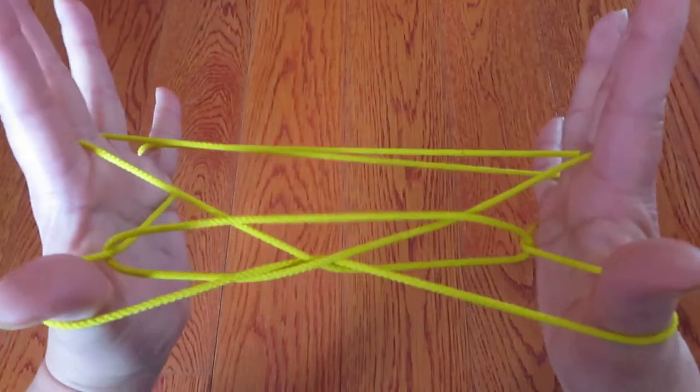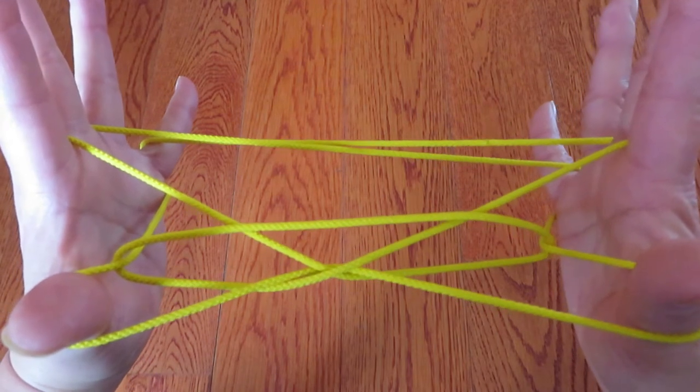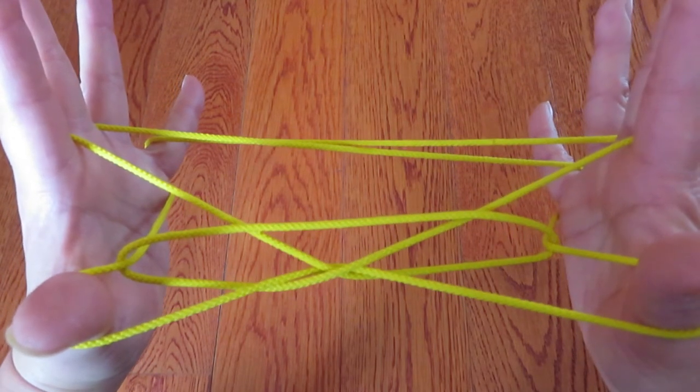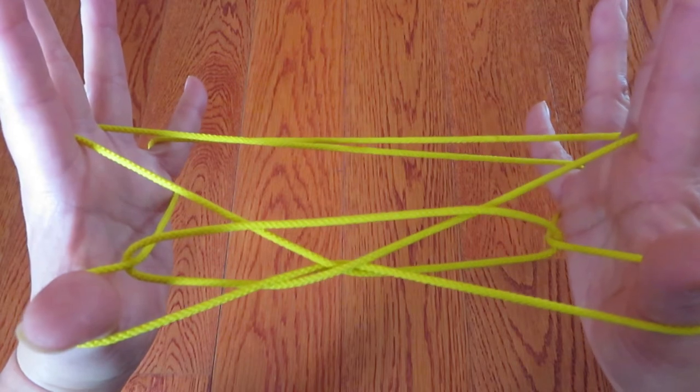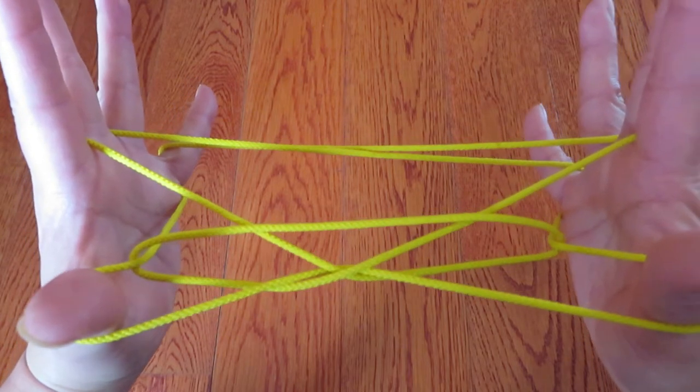Now slowly let the strings around both pinkies go and pull to the side a little bit. And this makes a morning glory.